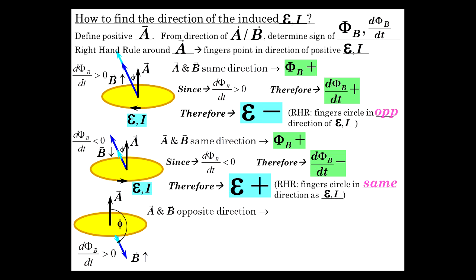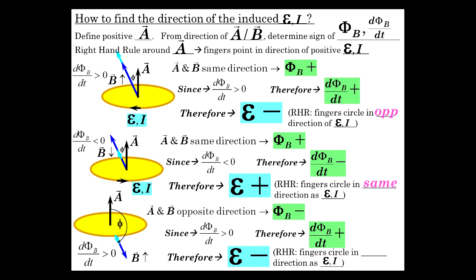The magnetic field actually is getting smaller. So A and B are in opposite directions. That gives a negative flux. Again, that's not so important, but that the dΦ_B/dt is less than zero.